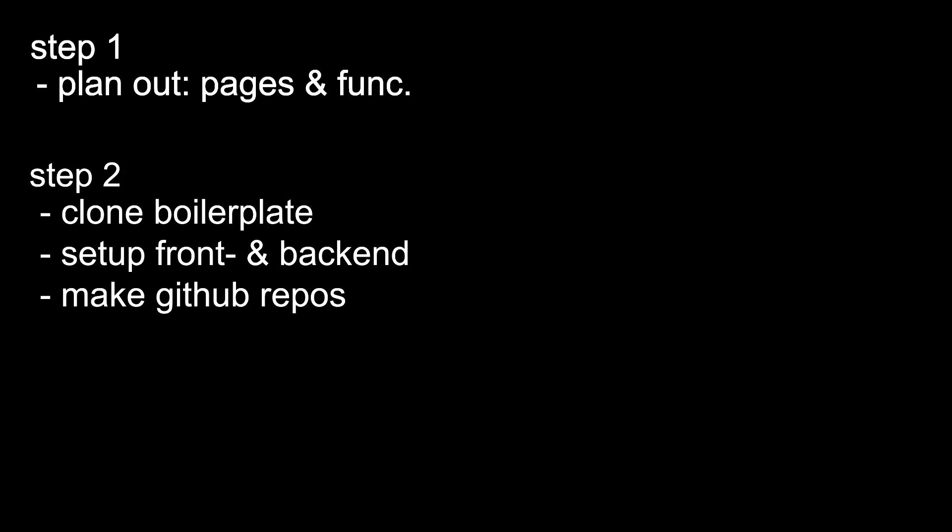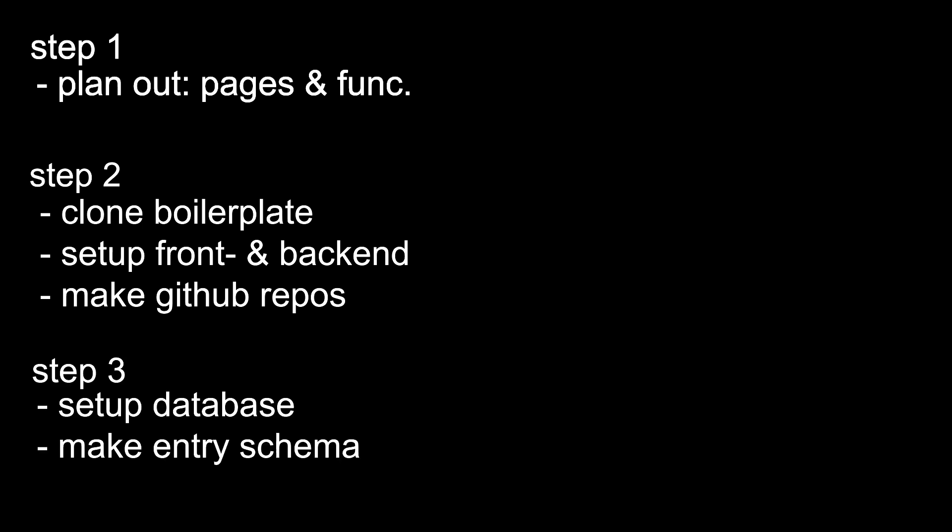Step one: plan out the project with the different pages it should include and the functionalities. Step two: clone my boilerplate project and set up the frontend and the backend, which will also include creating the GitHub repos. Step three: set up the database, including how to structure different entries. Step four: implement everything we found out in step one.